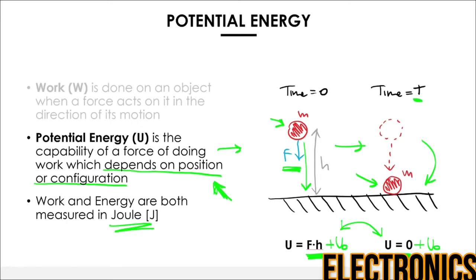This is really important to understand because potential energy is intimately related to voltage, and the same concept also applies to voltage. When you say that at a certain point there are three volts, in reality all you're saying is that there are three volts more than some other point. It doesn't mean that point is absolutely three volts — it's simply the difference relative to another point of the circuit.